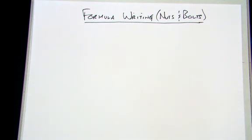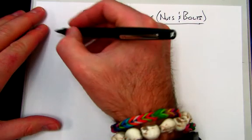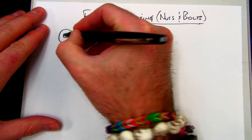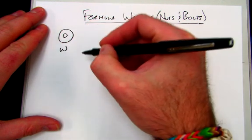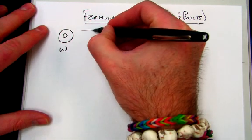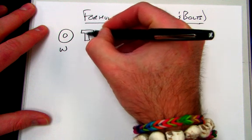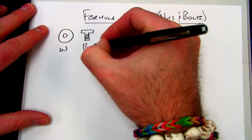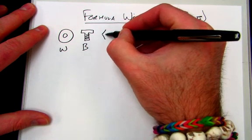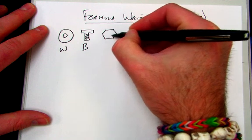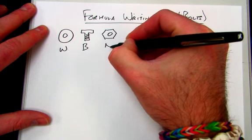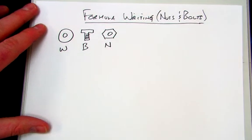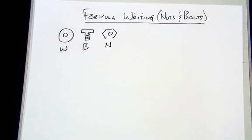Here's how we do formula writing with nuts and bolts. We're going to remind ourselves what everything looks like. Washers, we're going to abbreviate with a W. Our bolt, we're going to abbreviate with a B. And nut, let's see if I can do a better hexagon. There we go. That's about as good as it gets.